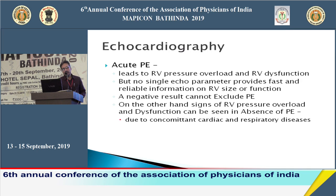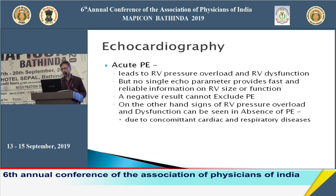Echocardiography is the mainstay of investigation in acute pulmonary embolism, showing RV dilatation and RV dysfunction. However, no single echo parameter can reliably differentiate pulmonary embolism from other causes of RV enlargement. Echo is useful in ruling out other causes of acute dyspnea. If the history is classic, BP is low, and echo shows RV dilatation, tricuspid regurgitation, and RV dysfunction without another explanation, pulmonary embolism must be investigated.